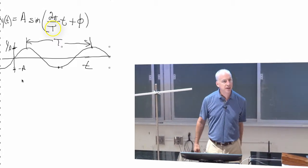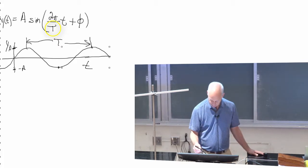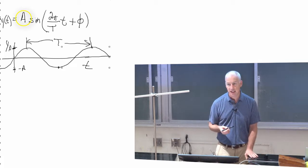So T is the period of the oscillation. That's what one of these constants is, the period. A is the amplitude, that tells you how big the oscillation is.